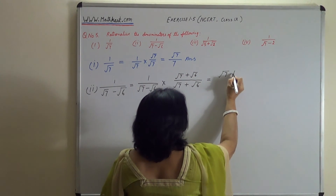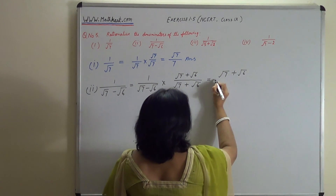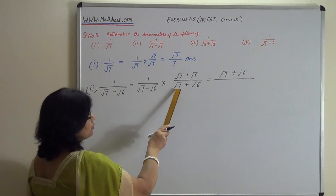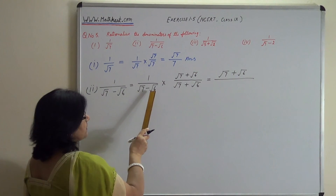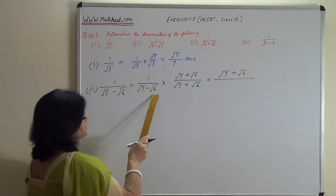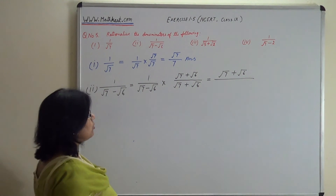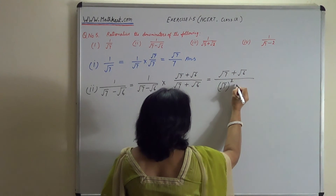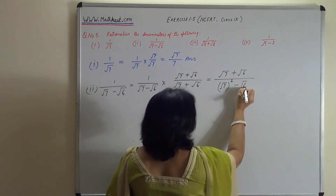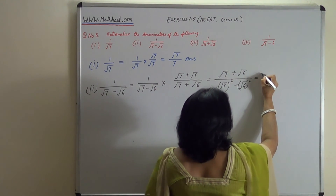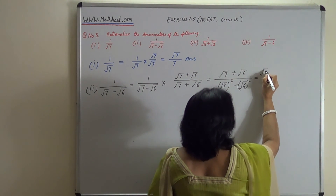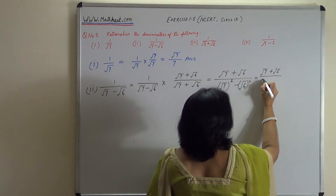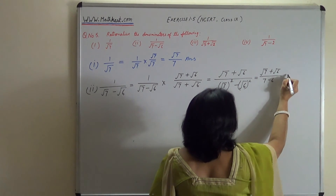So we get root 7 plus root 6 upon root 7 minus root 6 into root 7 plus root 6. Using the identity (a minus b)(a plus b) = a squared minus b squared, root 7 minus root 6 into root 7 plus root 6 gives root 7 squared minus root 6 squared, which equals 7 minus 6 = 1. So the answer is root 7 plus root 6.